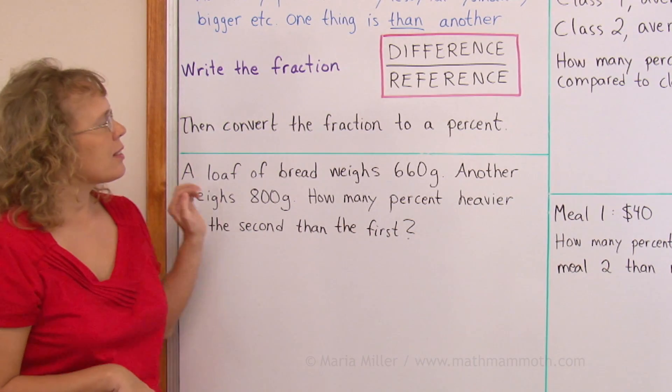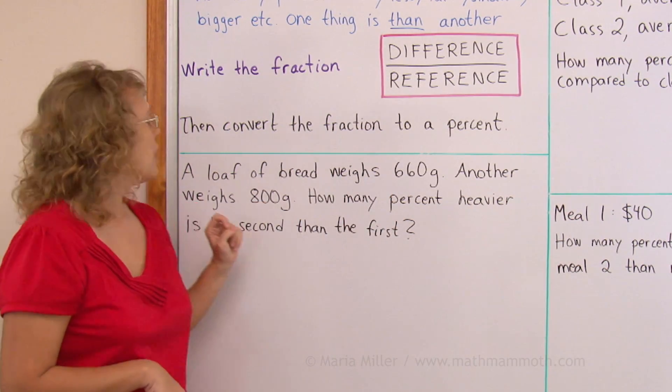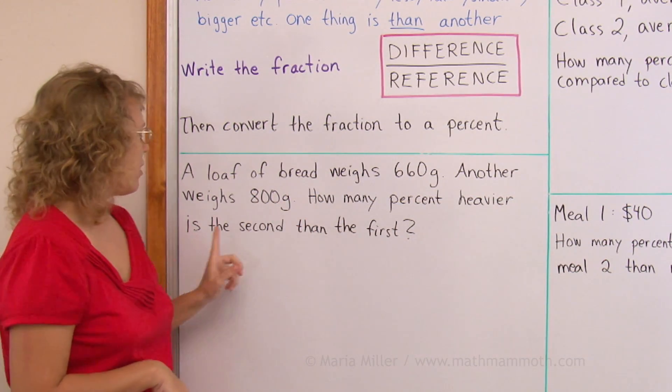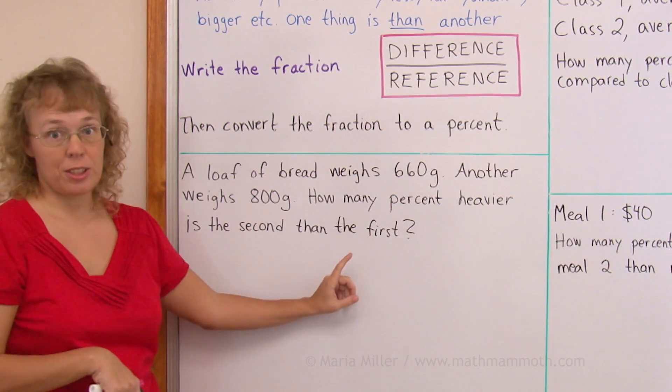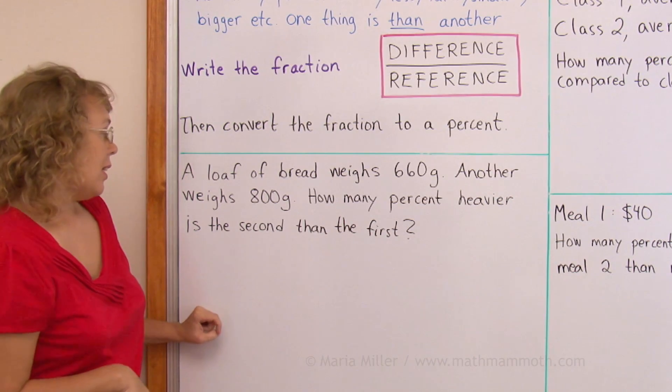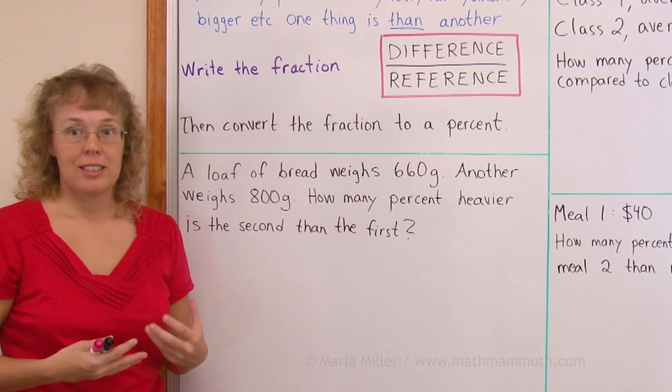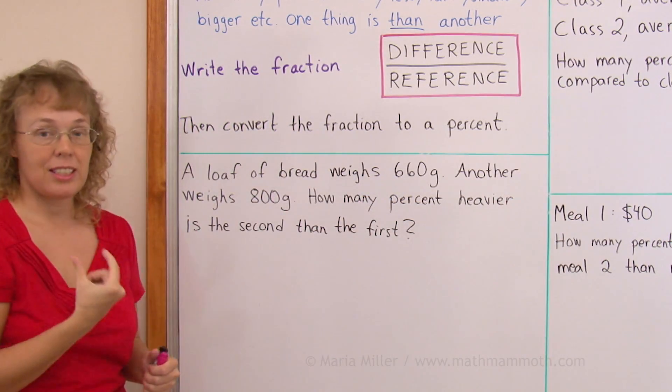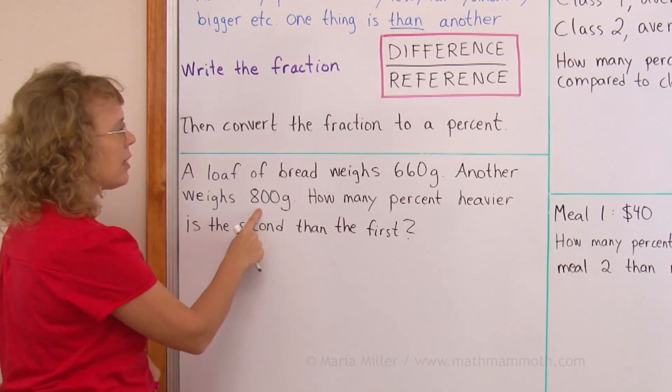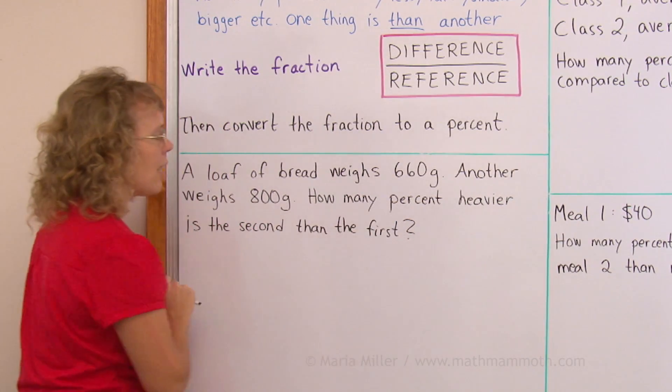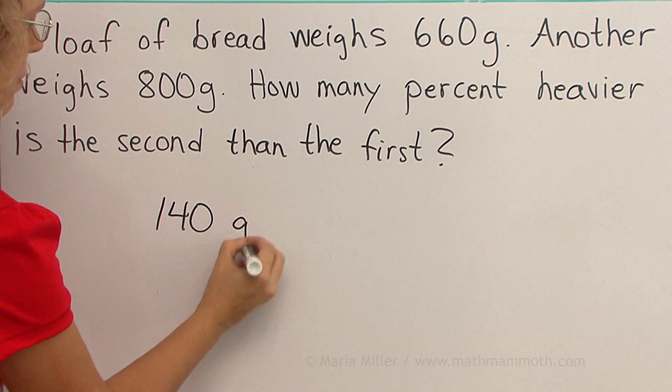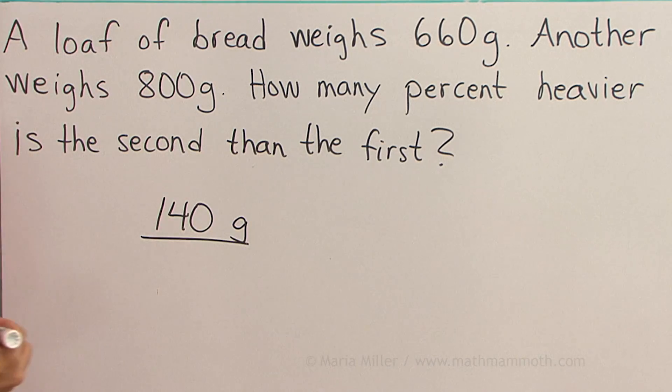A loaf of bread weighs 660 grams. Another weighs 800 grams. How many percent heavier is the second than the first? First, we will calculate the actual amount that this one bread is heavier than the other. The difference in their weights. So 800 minus 660 grams. That would be 140 grams.